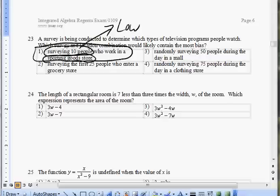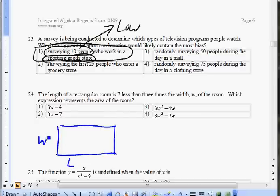Question 24: The length of a rectangular room is seven less than three times the width w of the room. Which expression represents the area of the room? Picture a rectangular room here. The statement states that the length is seven less than three times the width. So length is minus seven from three times the width. Instead of length, it'll just be 3w minus 7, and the width is w.